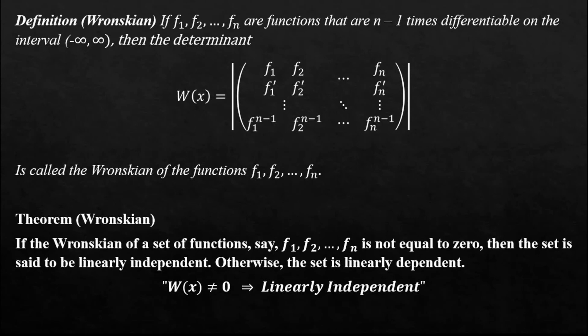The definition for the Wronskian scheme: if you're given n functions, and these n functions are n minus 1 times differentiable — simply said, you should be able to find n minus 1 derivatives — on the open interval from negative infinity to positive infinity, then the Wronskian is a determinant of these functions, where each column starts off with the function, and then beneath it you start doing the derivatives, taking n minus 1 derivatives, until you get to that last column f_n. We call this the Wronskian of the given functions.